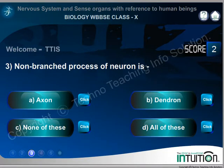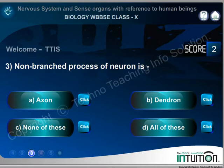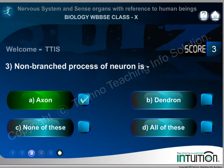Question 3. Non-branched process of neuron is: A. Axon. B. Dendron. C. None of these. D. All of these. Right answer: Axon.